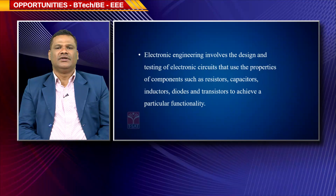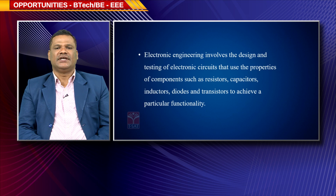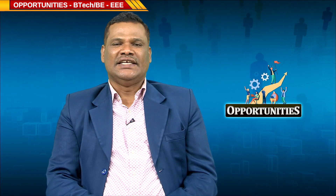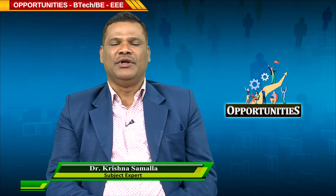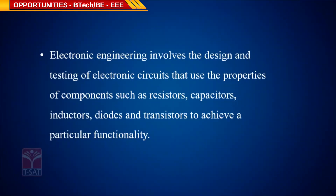Electronic engineering involves the design and testing of electronic circuits that use the properties of components such as resistors, capacitors, inductors, diodes, and transistors to achieve particular functionality. Electrical and electronics engineering is called Triple E. You need to have at minimum average knowledge of components like resistors, capacitors, inductors, and transistors — these are the basic electronic components.